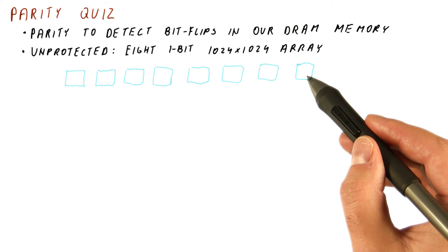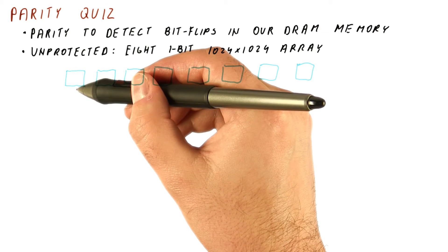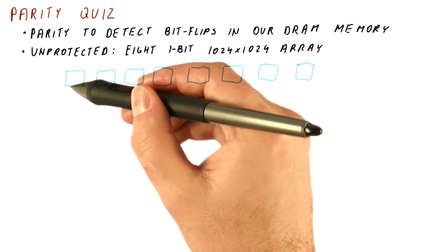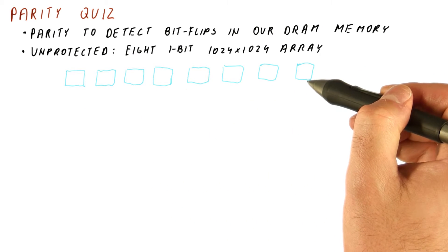So we have eight small arrays. Each of the arrays is given the same row and column address, and each of the arrays outputs one bit of the overall eight-bit value that we're trying to read or write in this memory.